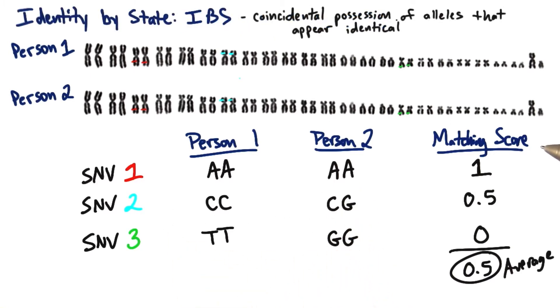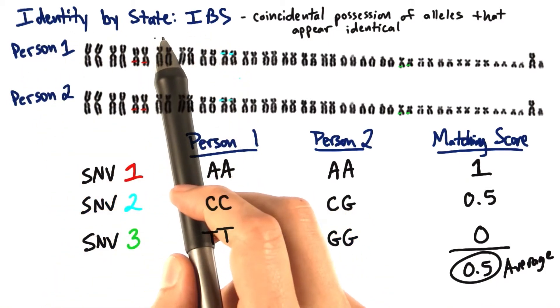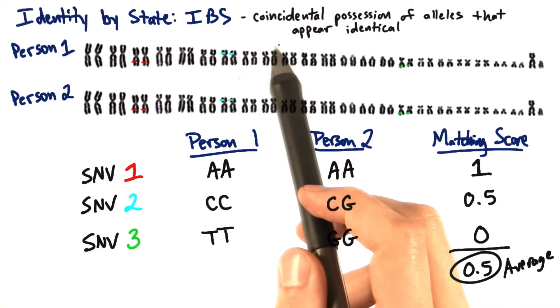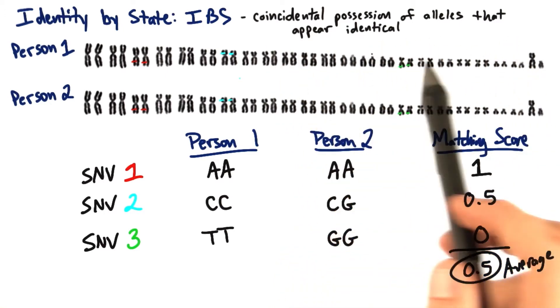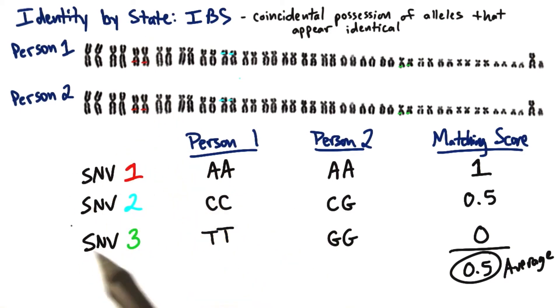This matching score is also referred to as an IBS score, or an identity by state score. Identity by state is just coincidental possession of alleles that appear identical. It's your identity by an individual state, or SNV.